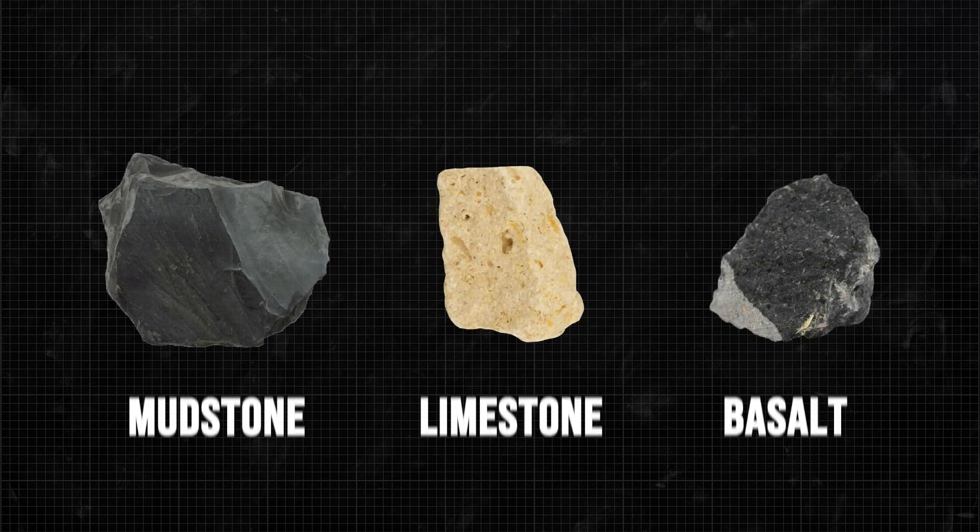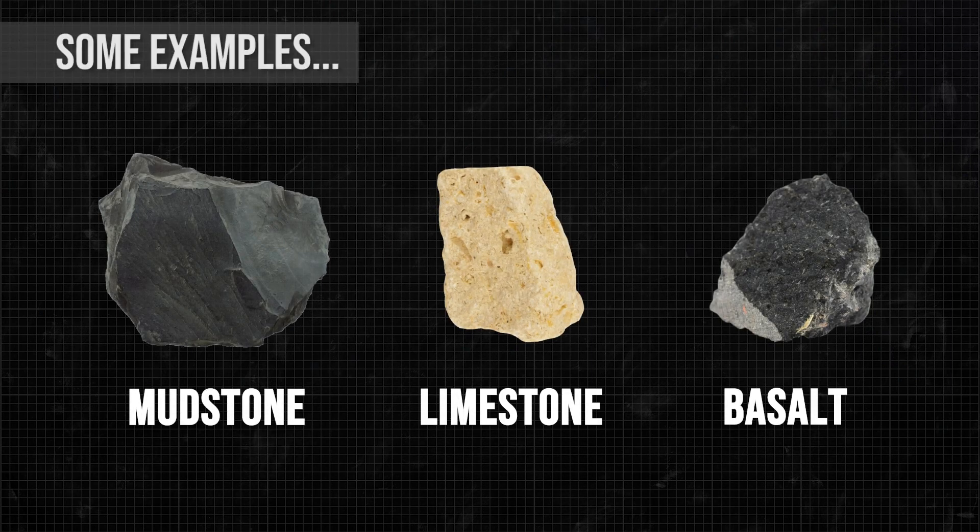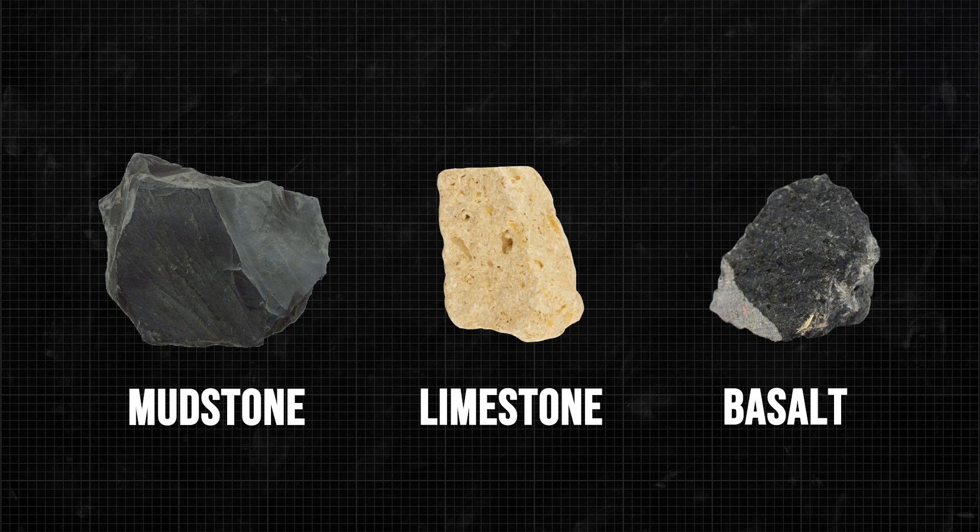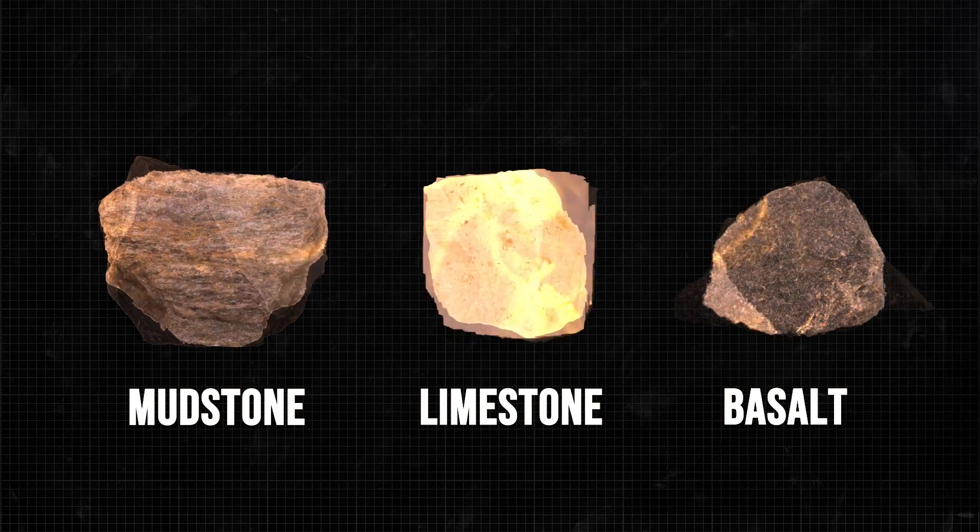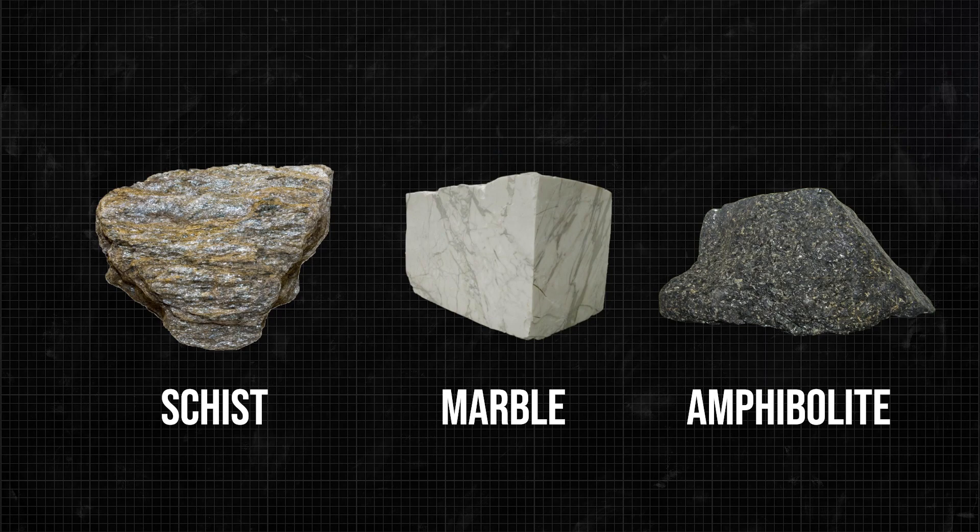Because there are so many kinds of protoliths and such a wide range in possible temperature, pressure, and fluids, there are an incredible number of possible minerals and mineral compositions that can form. And this means that there are many kinds of metamorphic rocks with many different names.